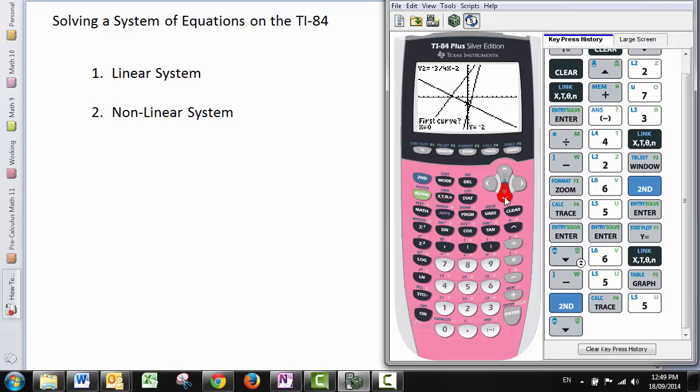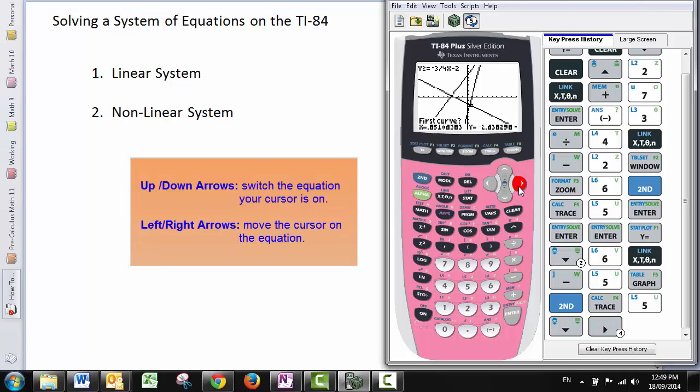The down arrow always switches between the equations. The left and right arrows move the cursor to the left or to the right along that equation. But pressing down will not move your cursor up and down. It just switches it over to another line.